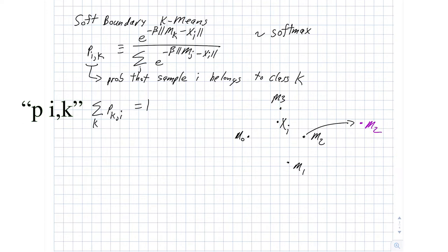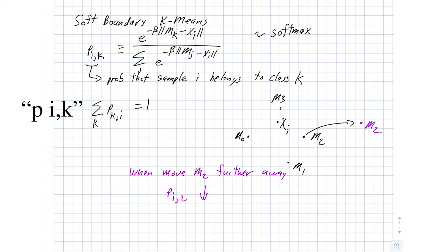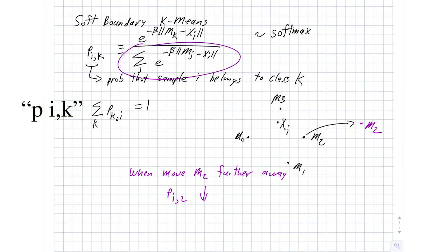The implication is that when we move M2 further away, the way we're computing this P means that P_i2 is going to go down because the distance is getting bigger. Because we are dividing by the sum of these terms, all of the other P_iK's not equal to two are going to go up because that full sum has to be equal to one.